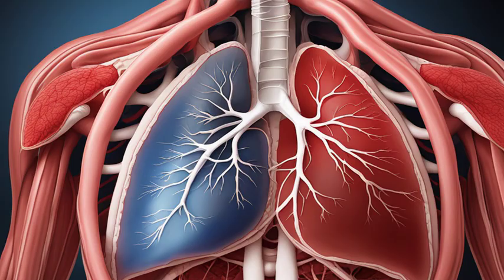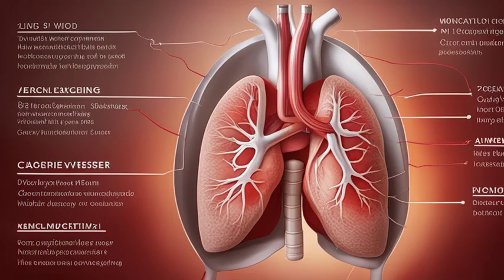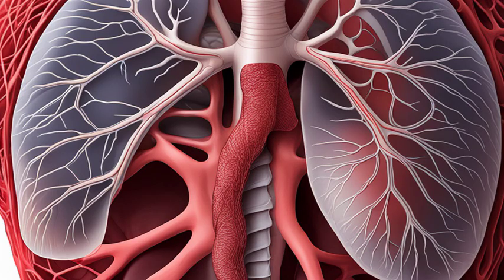Now, let's talk about a condition called pulmonary arteriovenous malformations, or PAVMs. These are abnormal connections between the arteries and veins in the lungs, which can lead to low oxygen levels in the blood.